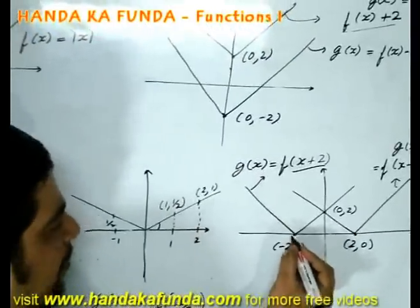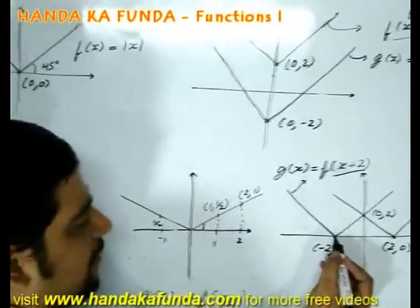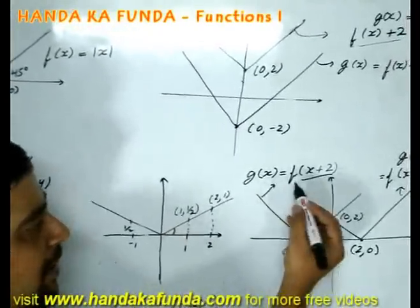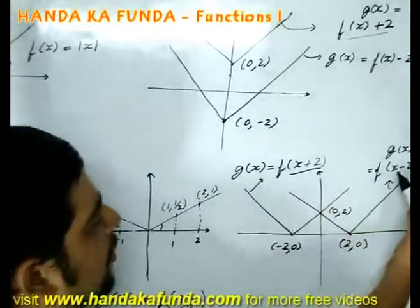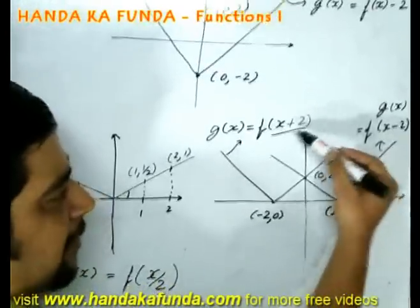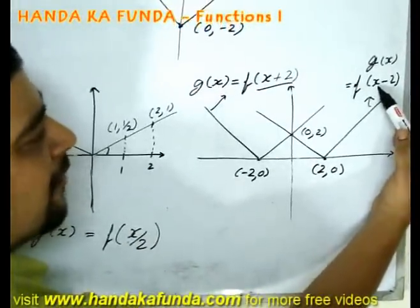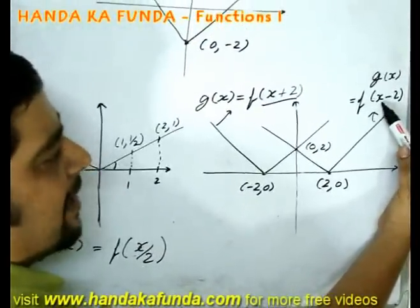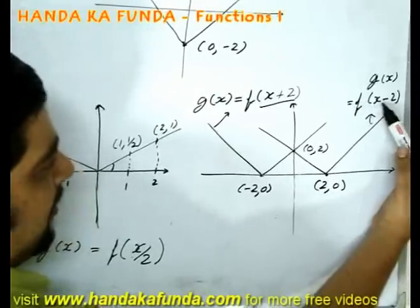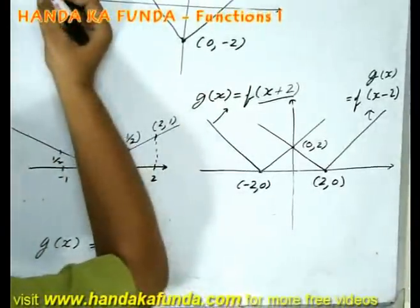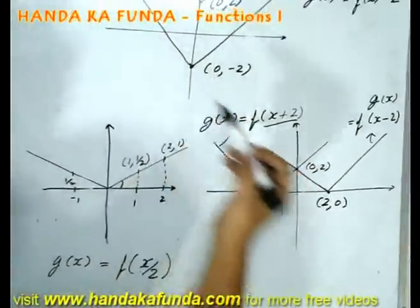And that is the reason the point A here shifts to minus 2 comma 0 in this case. However, if it was x minus 2 instead of x plus 2, what will happen? I will leave the value of x, which is my independent variable, to be 2. When it is 2, this becomes f(0) or x equals 0.